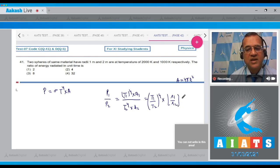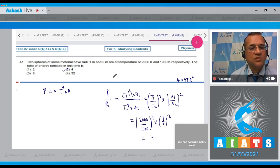Now fill the values: T1 is given 2000 divided by 1000, power is 4. The radii ratio is 1 by 2, so that's 16 divided by 4, which equals 4. So P1 by P2 is 4, the correct option is 2.